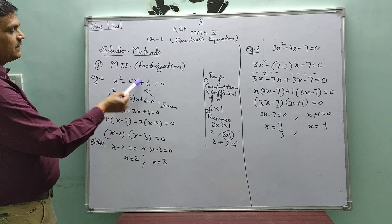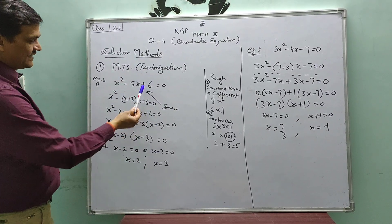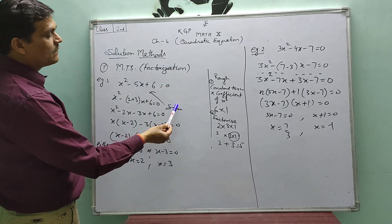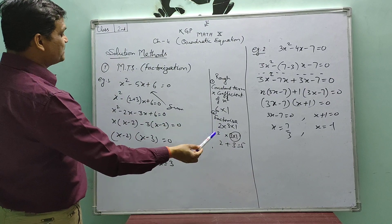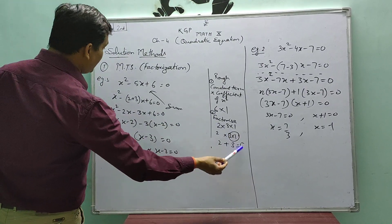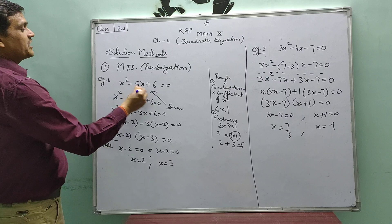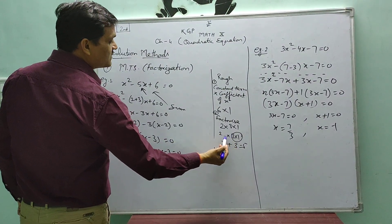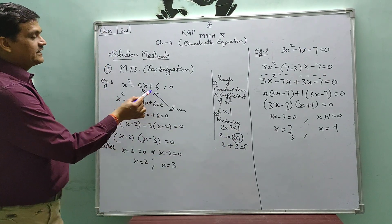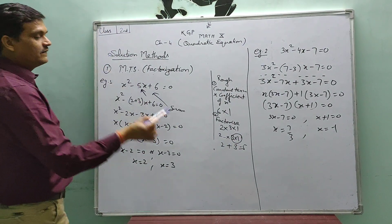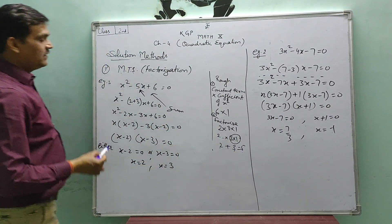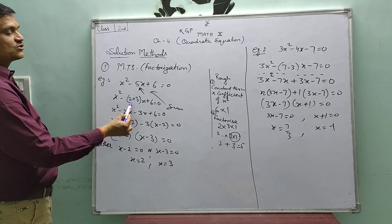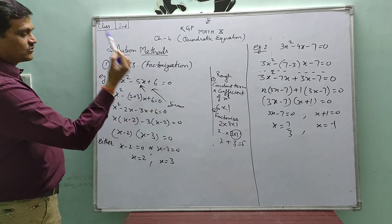Before the constant term, what is the sign — plus or minus? Here it is plus. So we need a pair of factors whose sum is equal to the coefficient of x, which is 5. We arrange these factors so that their sum is 5. Since 2 plus 3 equals 5, we replace the middle term by 2 plus 3. So: x squared minus (2 plus 3) x plus 6 equals to 0.